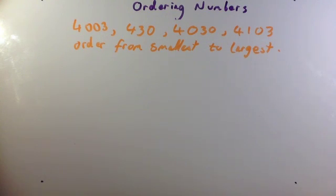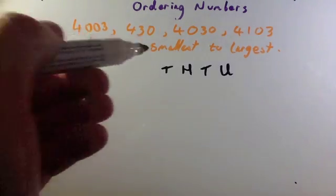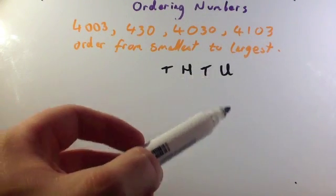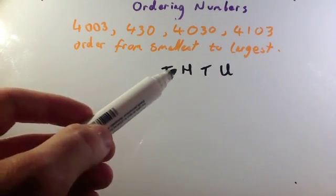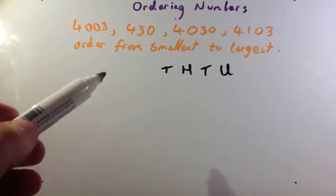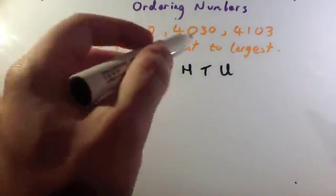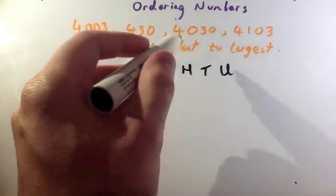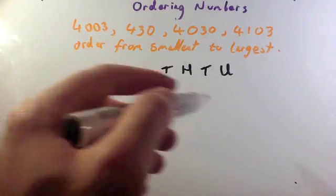So what I'm going to do is I'm going to quickly draw a place value table. So remember your place value. You've got units, tens, hundreds, thousands, tens of thousands if you were to carry on, hundreds of thousands, millions, etc. So what we're going to do is put each of these numbers underneath the place value columns.